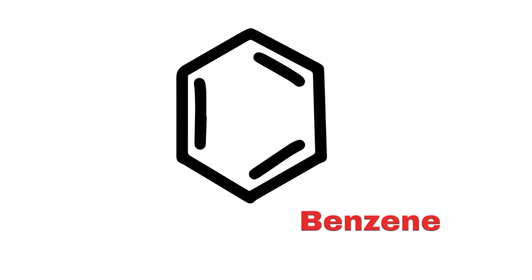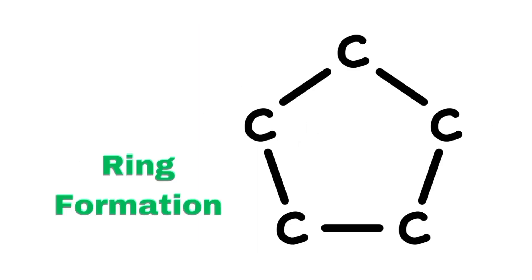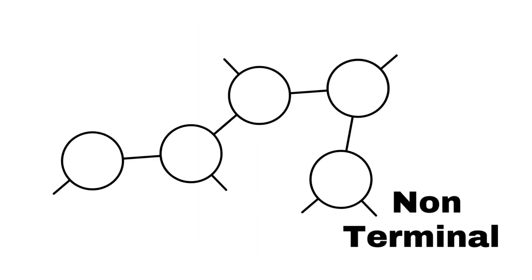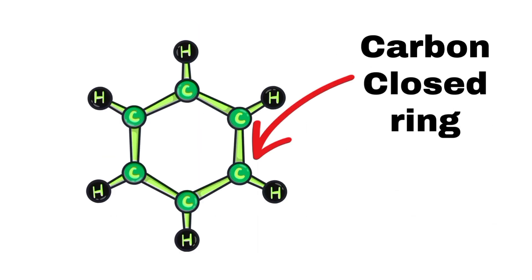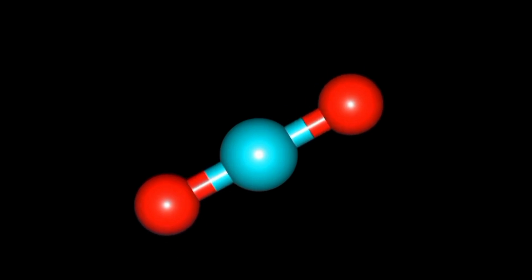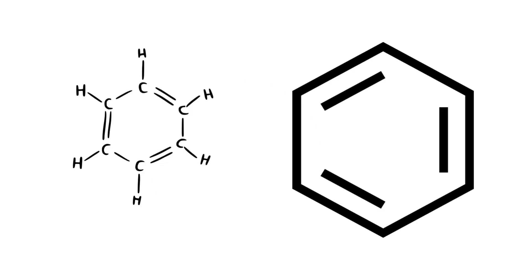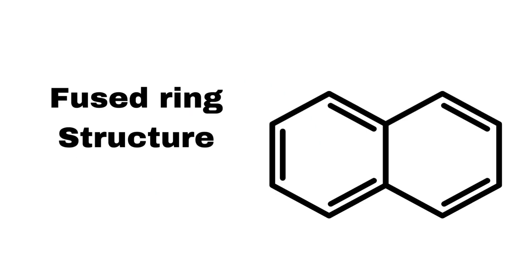Closed-chain compounds, also known as cyclic compounds, are organic molecules in which the carbon atoms are connected in a loop or ring structure. Unlike open-chain compounds, these have no terminal ends because the chain of carbon atoms forms a closed loop. Key features include a ring or cyclic pattern; the rings can be simple, like in benzene, or fused, like in naphthalene.